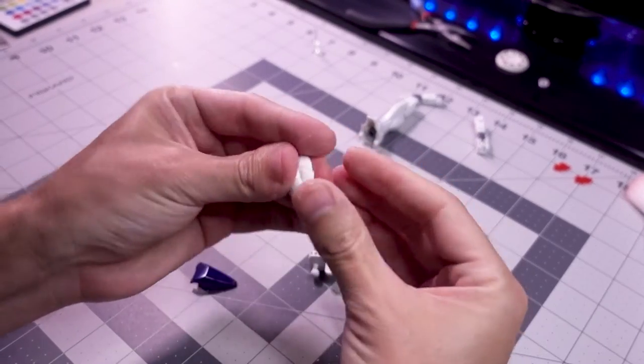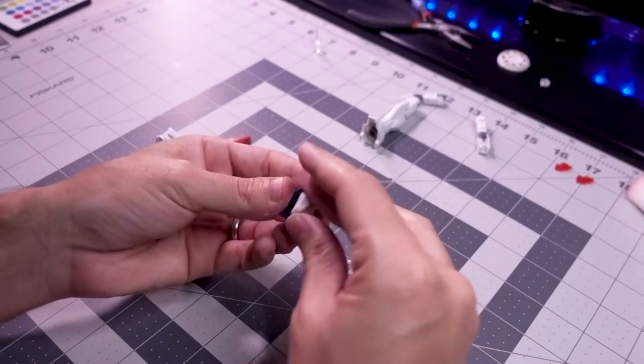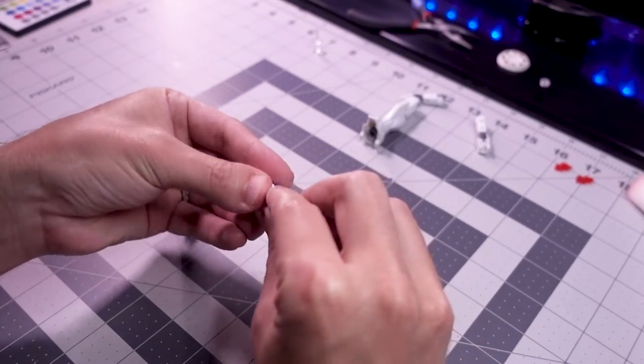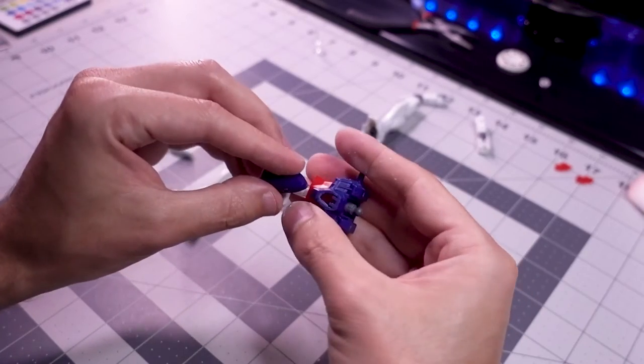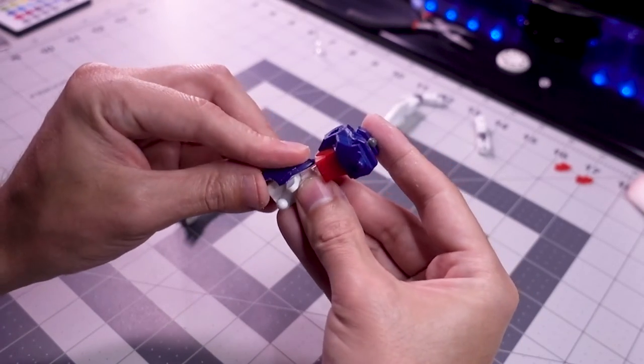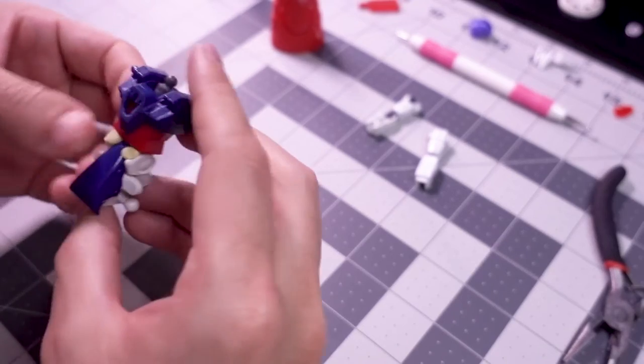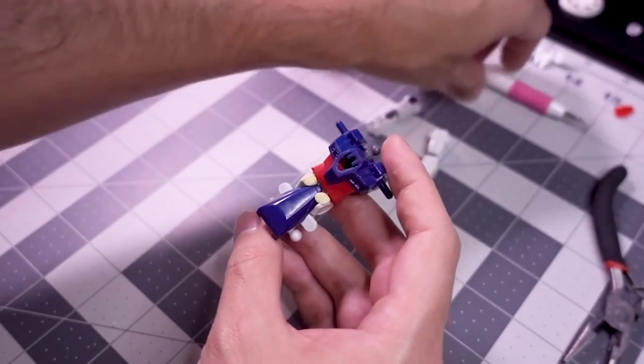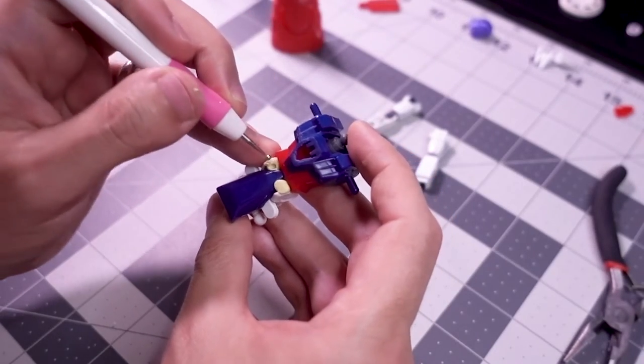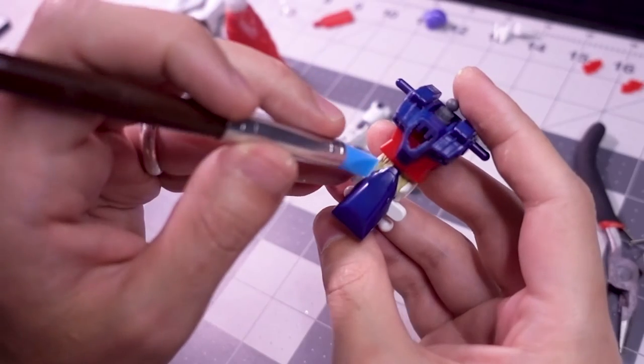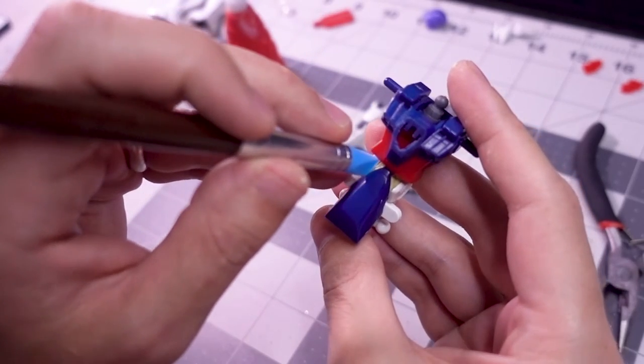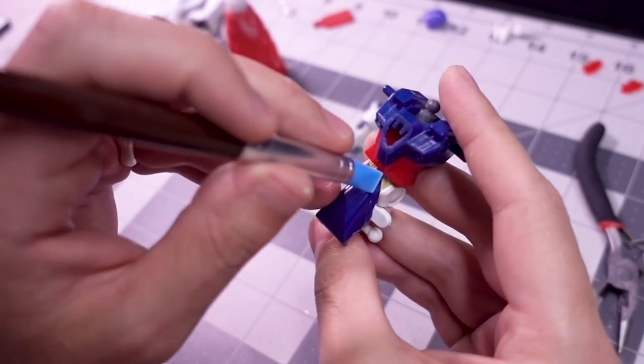Sometimes attaching oddly shaped pieces to one another can be challenging because there aren't many points of contact. To solve that issue here for this waist part, I'm jamming in a bunch of air-dry clay for a snug fit. A similar technique was used here to fill in these unnatural gaps, this time with Milliput. As with the last video, all of these materials I'm using are linked to in the video description in case you want to try this out for yourself.